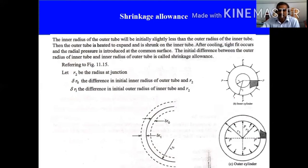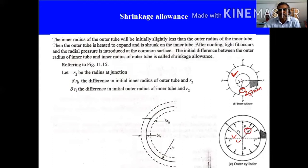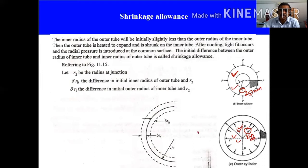As we discussed in compound cylinders, we want to fit one cylinder into another. We have a hollow cylinder and we want to fix it here. Assume that diameter R2 is equal to 251 mm. The inner diameter here is 249 mm. If you try to fix this cylinder directly, it is not possible. So you heat the outer cylinder.